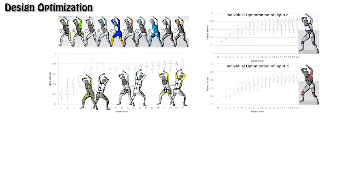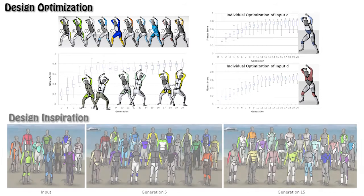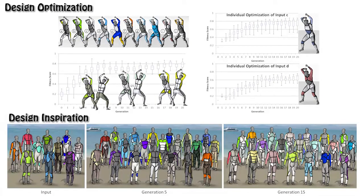The design optimization scheme helps improve the quality of styling curves. We can see that the fitness score is increasing during the evolution, starting from very low score inputs. The design inspiration scheme is used to increase the variance of styling designs by retaining enough diversity. Therefore, designers can be inspired by the diversified results.